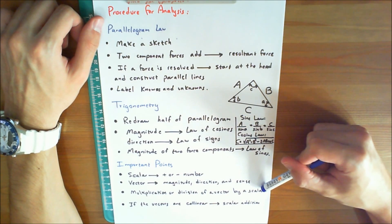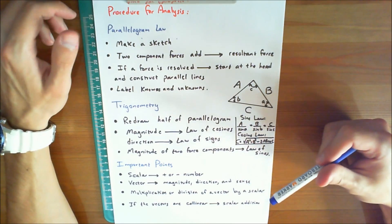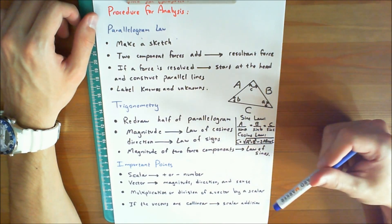Multiplication or division of a vector by a scalar will change the magnitude of the vector. The sense of the vector will change if the scalar is negative.